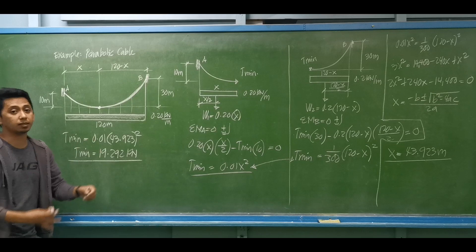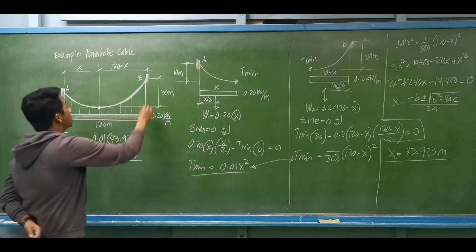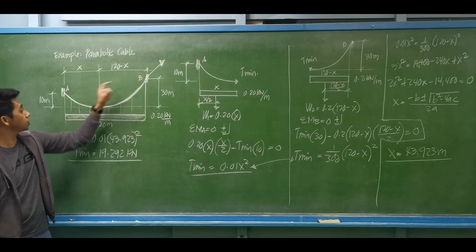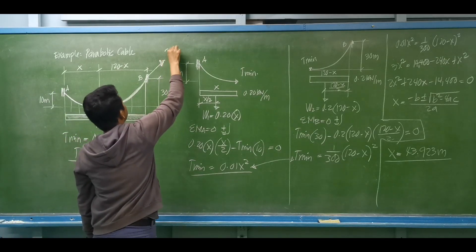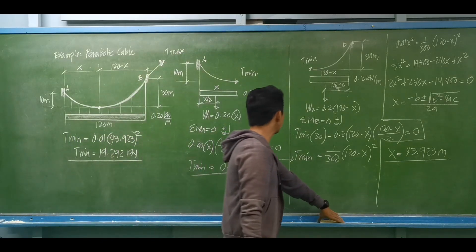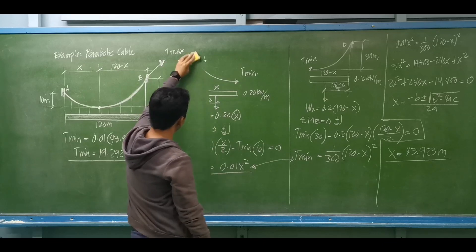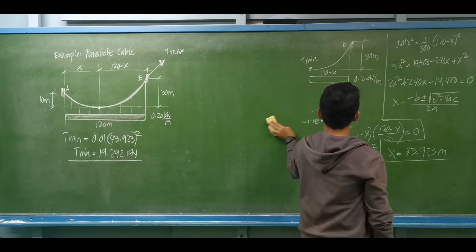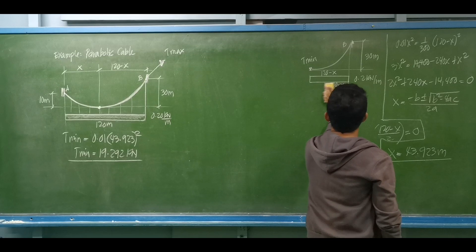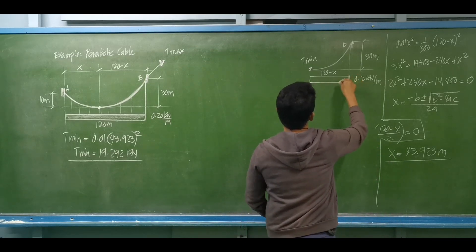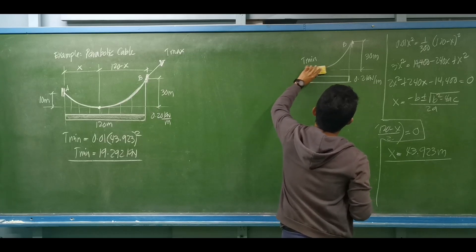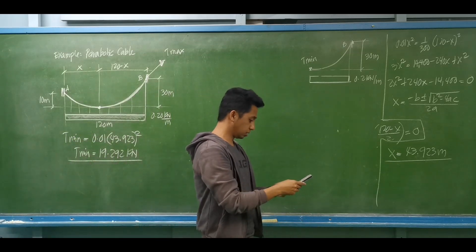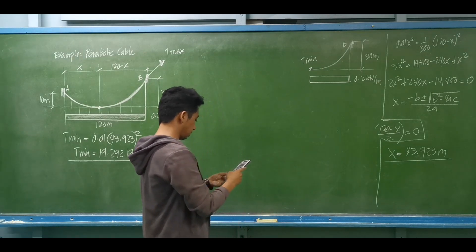Where is the maximum tension located? The maximum tension is located at the highest point of the cable, which is at the higher support. Since support B is higher than A, T-max is at support B. To find T-max, we first determine the total weight on the right side. The span on the right side is 120 minus x, which is 120 minus 43.923, giving 76.077 meters.